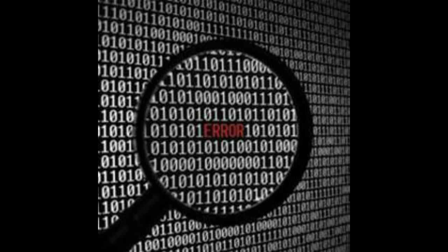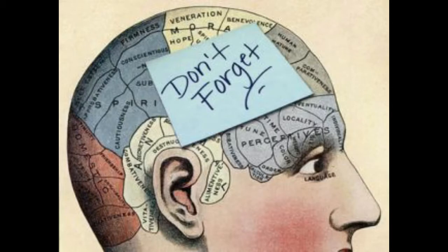Data corruption affects memory, where memory is a device used to store information for immediate use in a computer or related hardware devices. To protect memory from data corruption, we must use mutual exclusion.